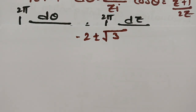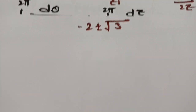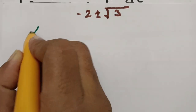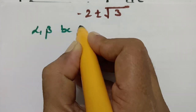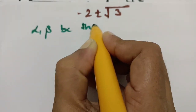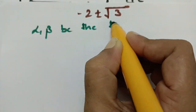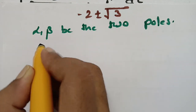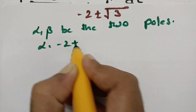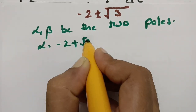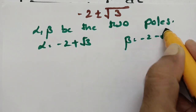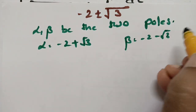We consider α and β as the two roots (poles). The first pole α = −2 + √3 and the second pole β = −2 − √3.